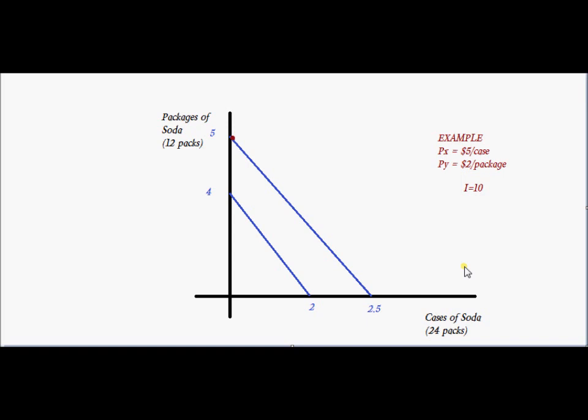Let's suppose that we have an income of $10. How do we draw the budget constraint? If I spend all of my money on packages of soda, I can buy five packages spending all of my $10, bundle A. If I spend all of my money on cases of soda, I can buy two cases, bundle B. My budget constraint connects those two dots. That's standard what we do if we connect the two dots of spending all our money on one good versus all our money on the other.